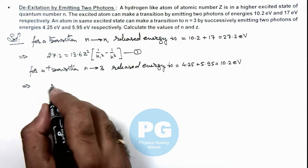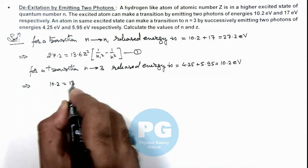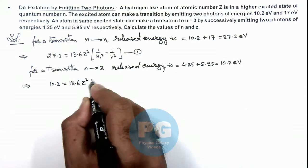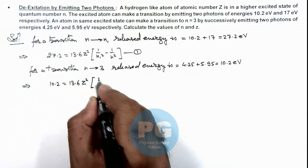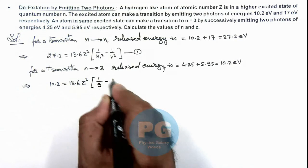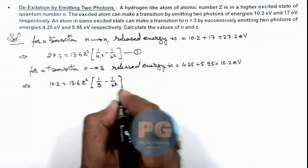the release energy 10.2 is equal to 13.6 z square multiplied by 1 by 3 square is 9 minus 1 by n square. Say this is equation 2.